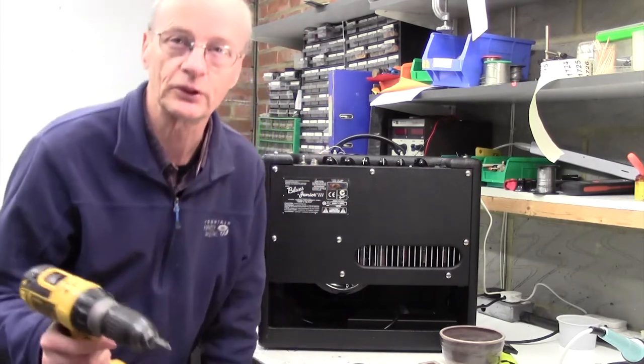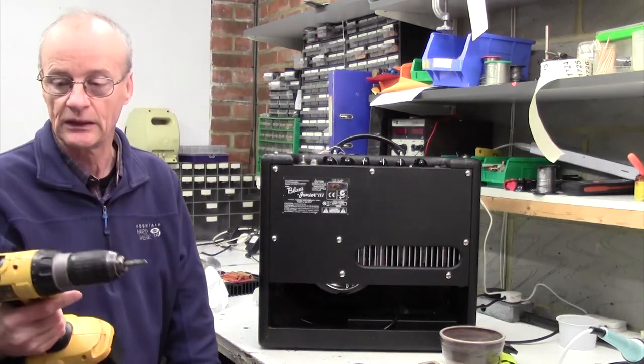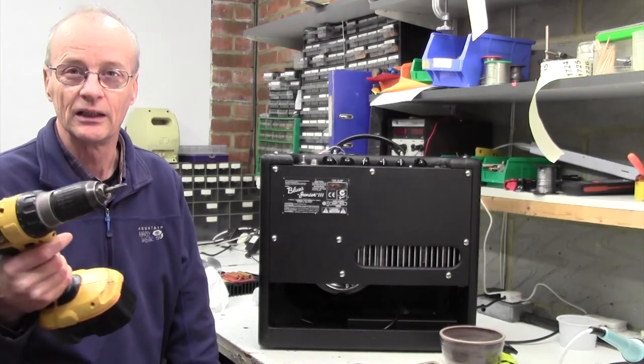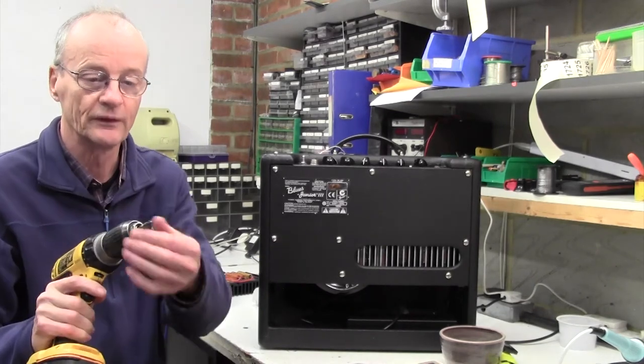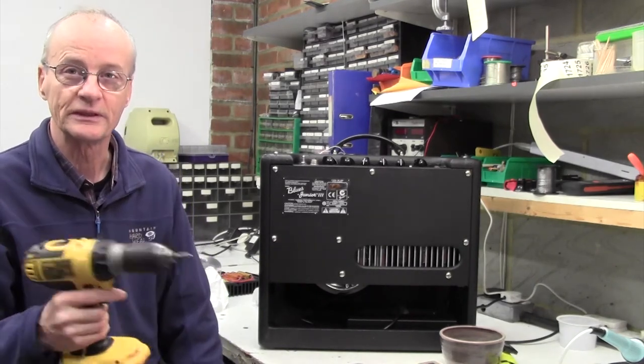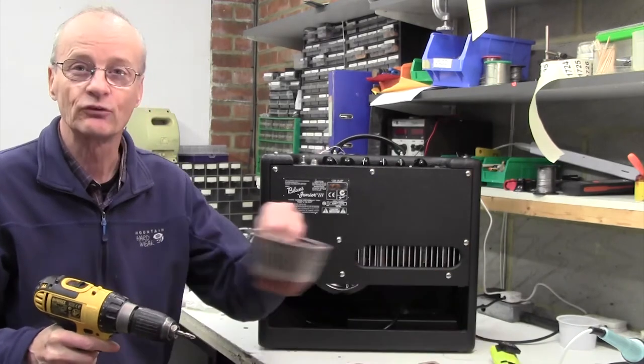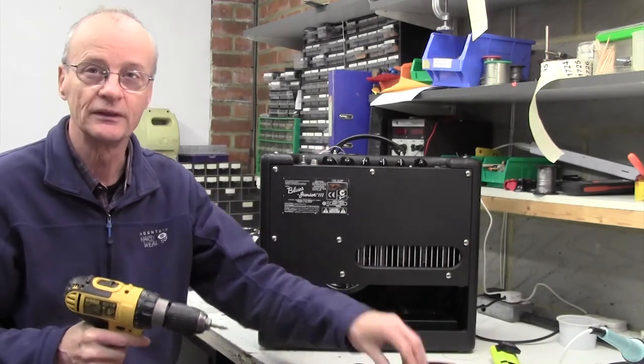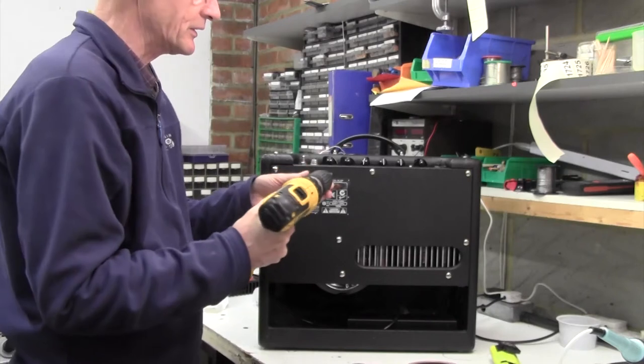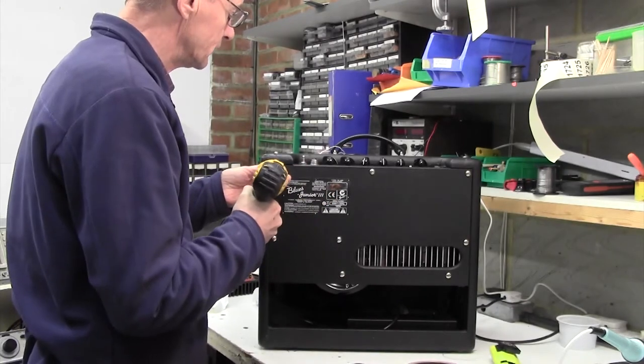To do that I've got my trusty Dewalt drill with a positive drive bit in it. It makes it quite easy, and of course always have a pot to put the parts in. So we'll go ahead and take the back off this amp.